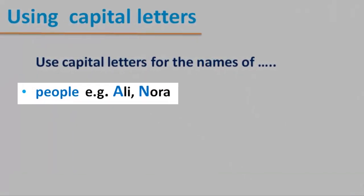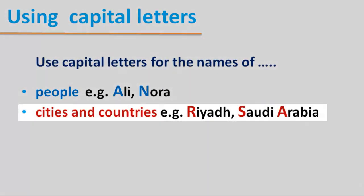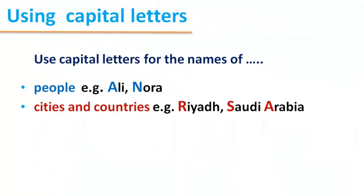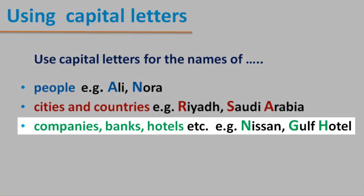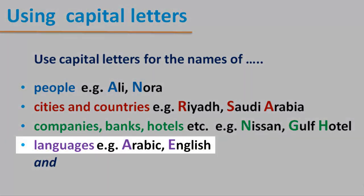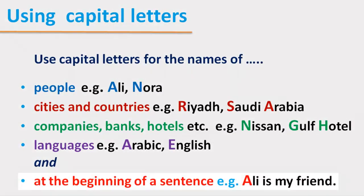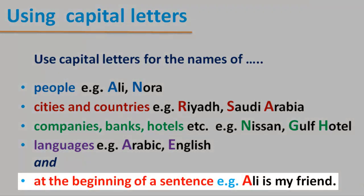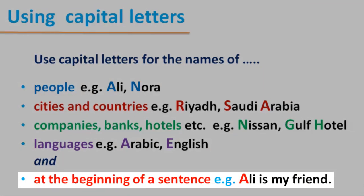Use capital letters for: names of people — for example, Ali, Nora; cities and countries — for example, Riyadh, Saudi Arabia; companies, banks, and hotels — for example, Nissan, Gulf Hotel; languages — for example, Arabic, English; and at the beginning of a sentence — for example, 'Ali is my friend.'